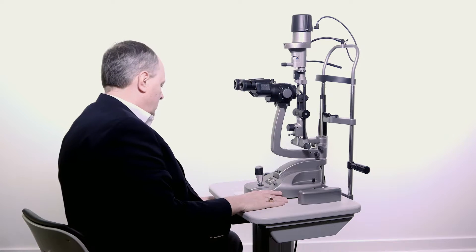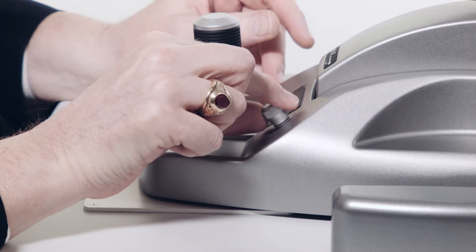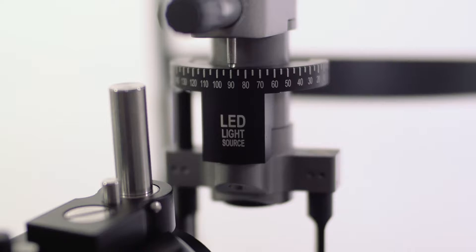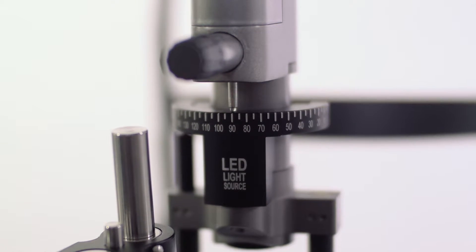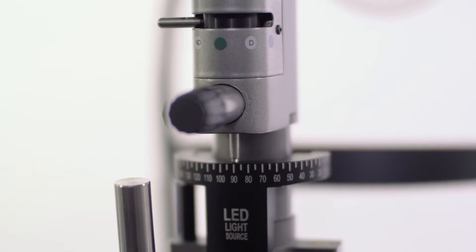Switch on illumination using the main power switch. Adjust illumination using the rheostat near the joystick. The K-Series slit lamp offers LED or halogen illumination.